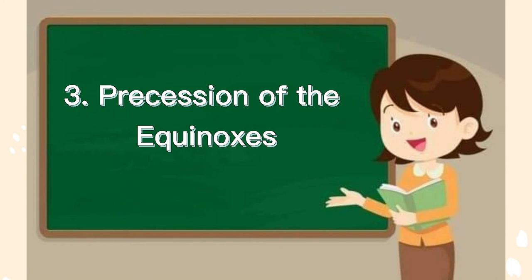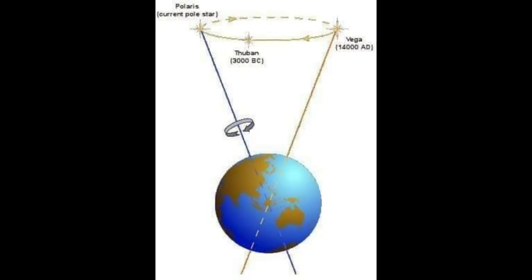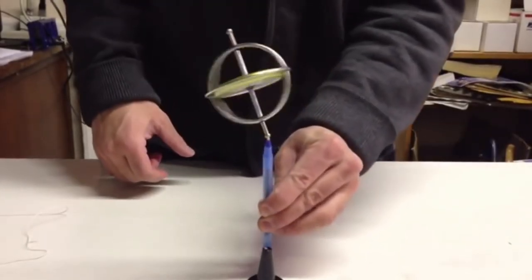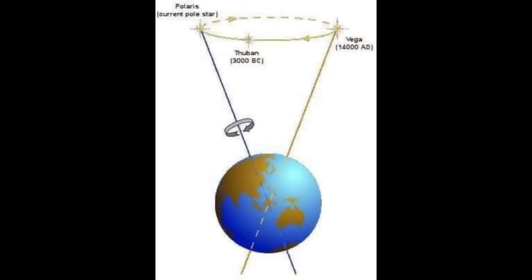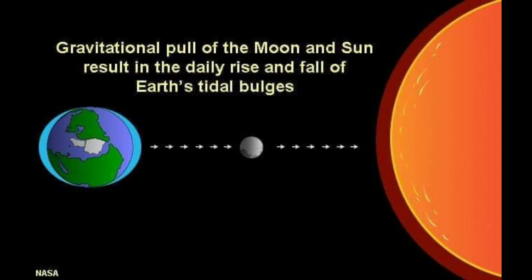Number 3: Recession of the equinoxes. Recession of the equinoxes is the apparent motion of the equinoxes along the ecliptic as earth wobbles. The earth spins on an imaginary axis tilted at 23.5 degrees. Study of star positions over long periods of time has revealed that the earth's axis is not fixed — it moves by tracing out a circle. This cyclic wobbling motion, called precession, repeats every 25,772 years. Recession is caused by the gravitational pull of the sun and the moon on the earth.